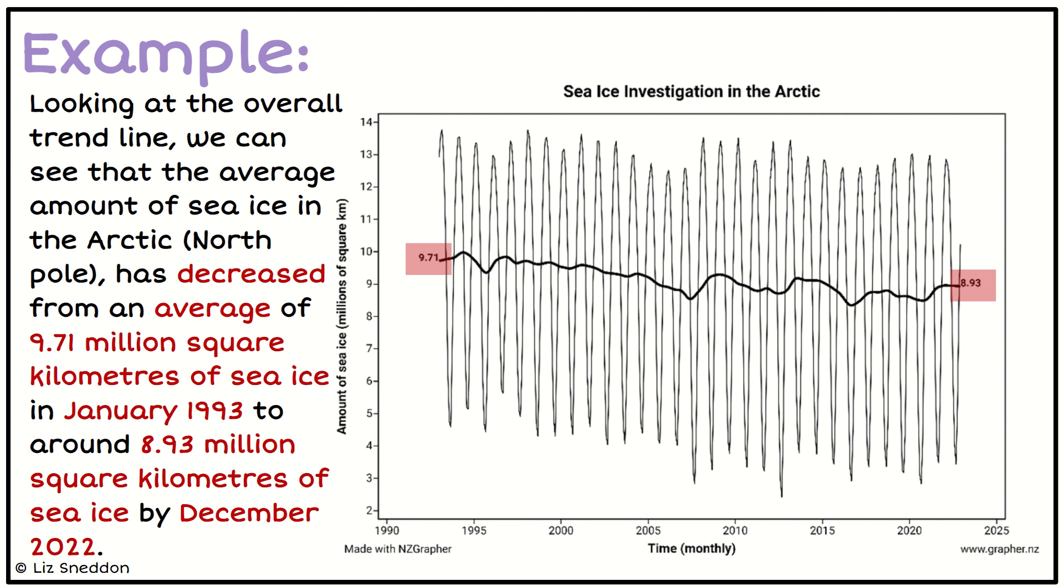So this is what I put together. So I say we can see that the average amount of sea ice in the Arctic, because that's what this data set's about, that has decreased from an average of 9.71 million square kilometres of sea ice in January of 1993. So that's the coordinate of the first data point. To around 8.93 million square kilometres of sea ice by December of 2022. So that's what we want to do for our trend line, as the overall pattern and include the start and end points of that pattern.